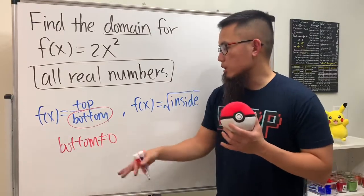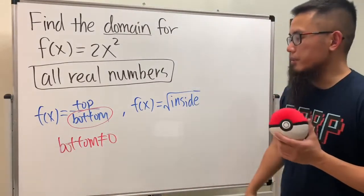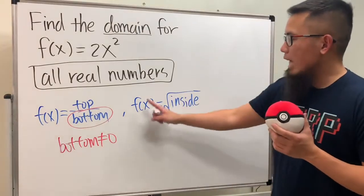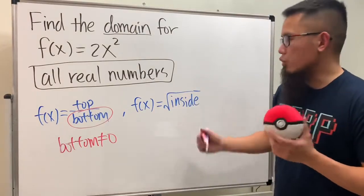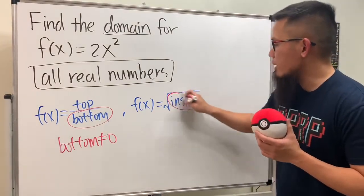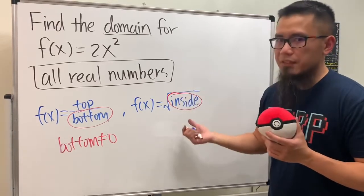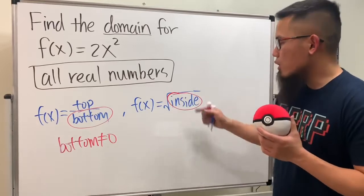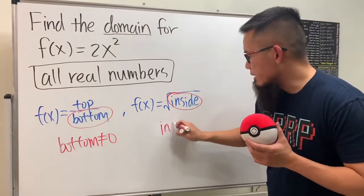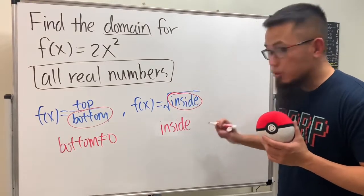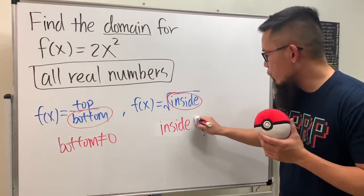And if you have this kind of situation to find the domain, you look at the inside of the square root. Remember, we cannot have negative numbers inside of the square root, so we will have to make sure the inside has to be greater than or equal to zero.